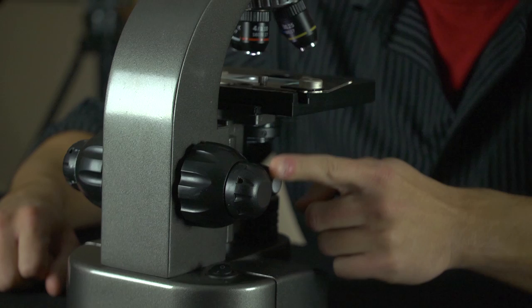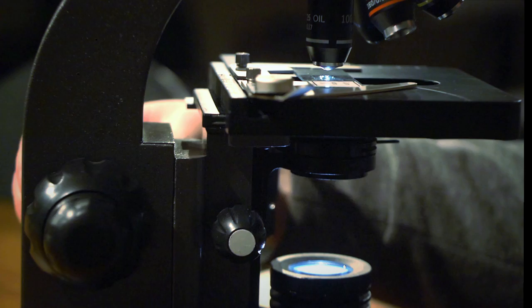The coarse and fine knobs can be found on both sides of the microscope. They have a nice fluid feel that's great for getting the stage to your ideal focal distance.